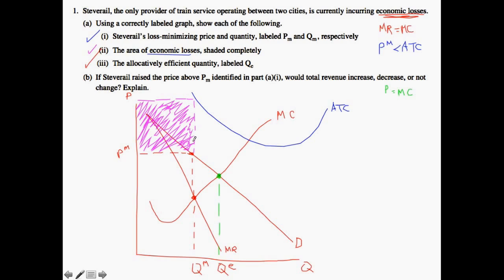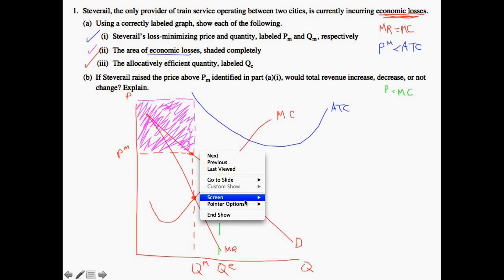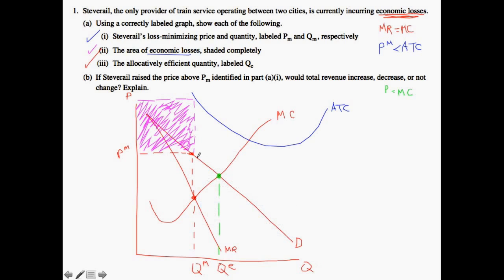Now let's think about Part B. If Steve Rail raised the price above PM identified in Part A, would total revenue increase, decrease, or not change? In order to figure this out, we need to look at the marginal revenue curve and see if it's positive, negative, or equal to zero. At PM we're talking about this point right here — I'm going to change that to blue so you can see it more clearly.